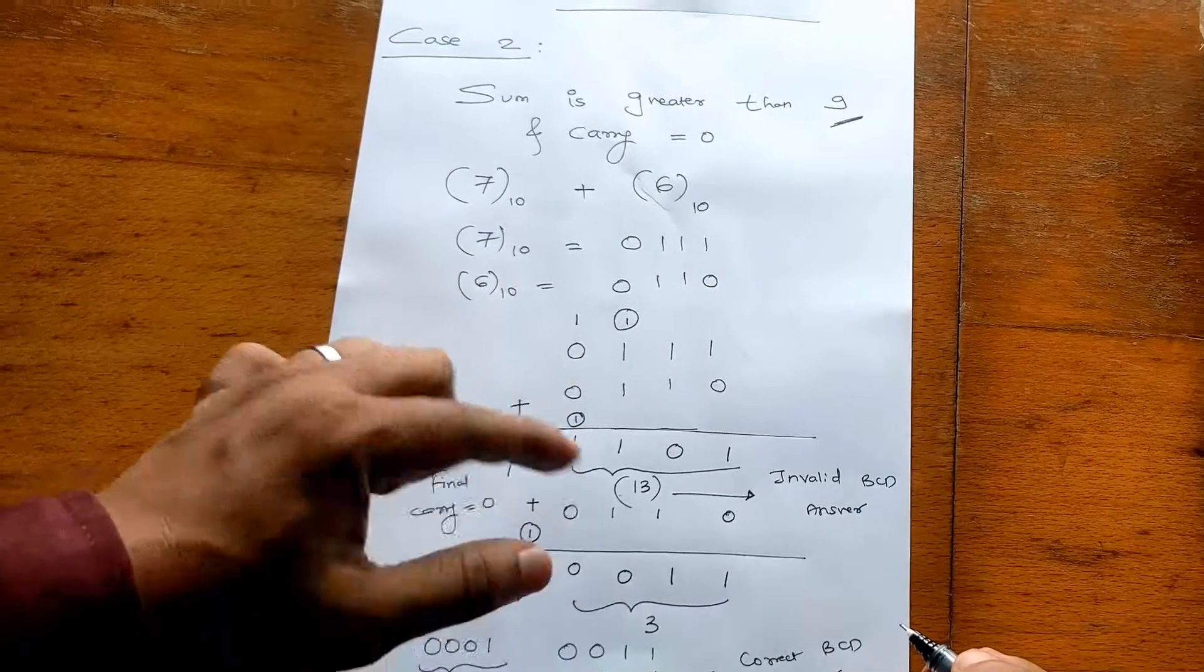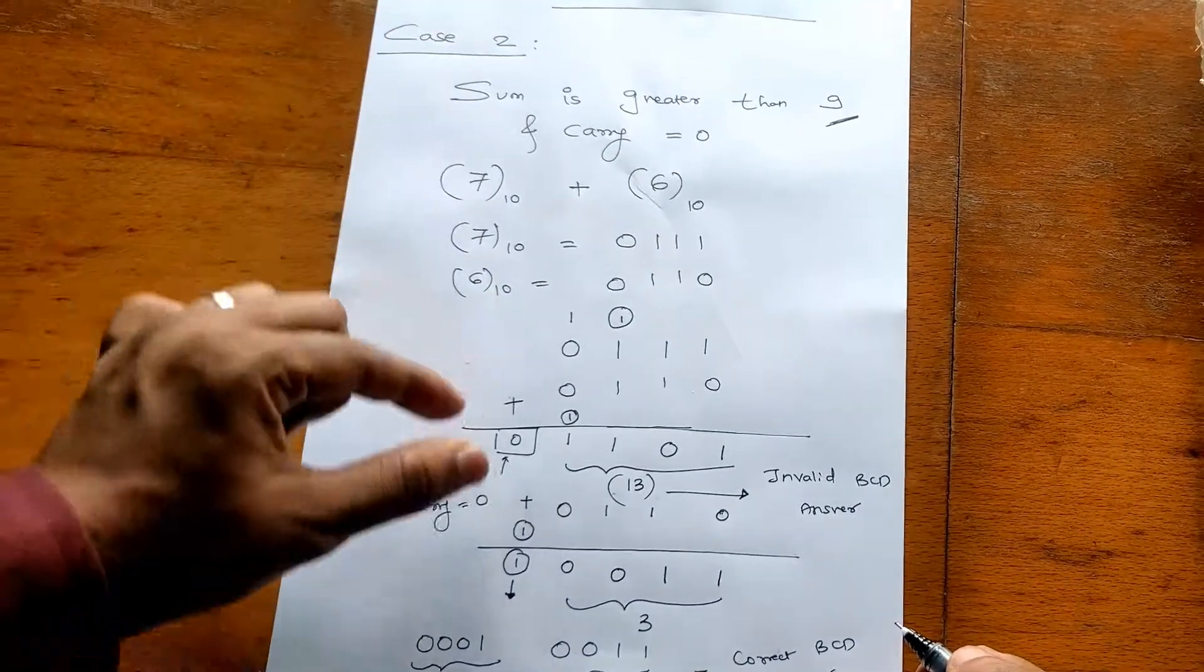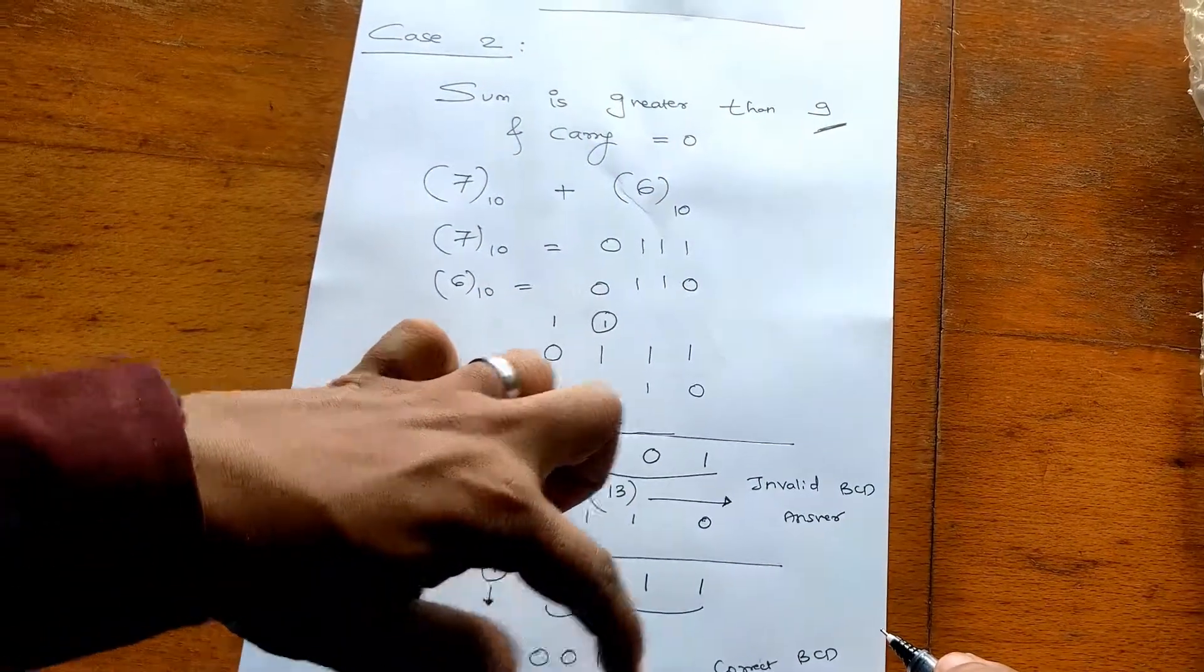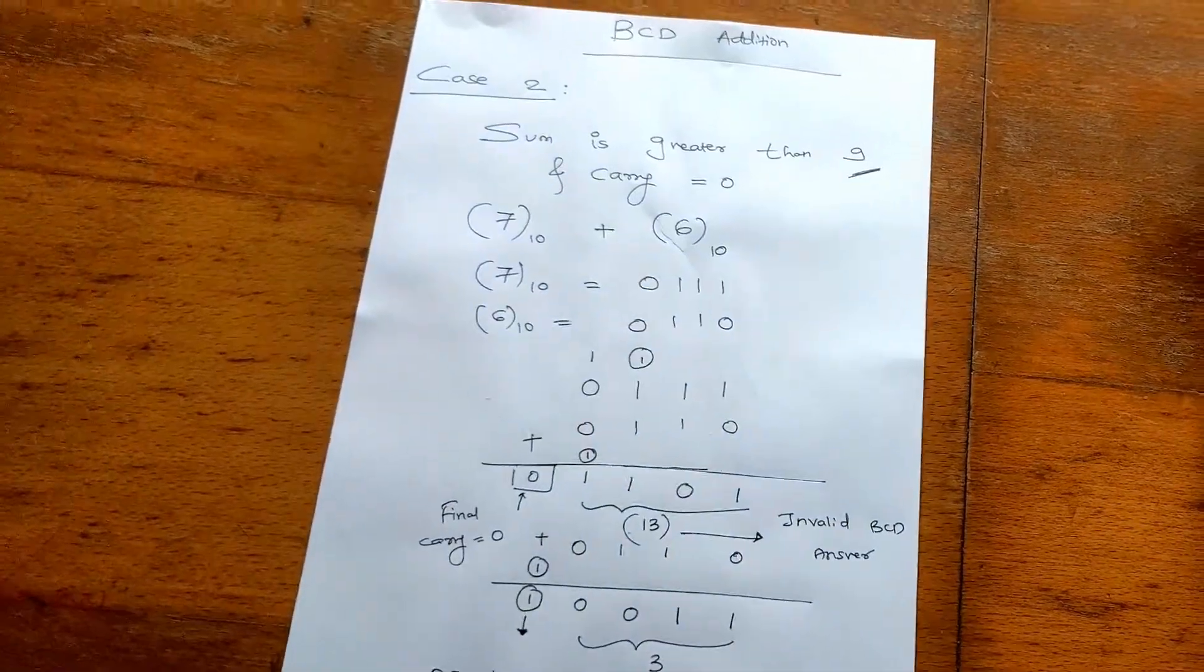So when it comes to Case 2, at the end you have to add 6 with the answer to get the correct BCD answer. Thank you.